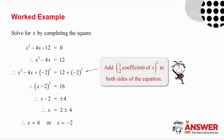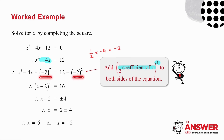I've got to work backwards now. I take the minus 4x term and think backwards — since squaring a binomial gives twice the product, I take half of the coefficient and square it. So when completing the square, I add half the coefficient of x, all squared, to both sides of the equation. Half of minus 4 is minus 2, so I add minus 2 squared to both sides.